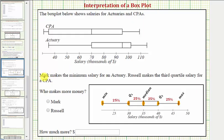For this problem, we're told that Mark makes the minimum salary for an actuary. Here's the box plot for an actuary. Since Mark makes the minimum salary, he makes this amount here, which would be thirty-five thousand.